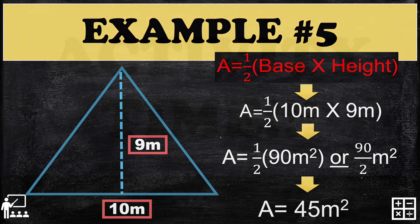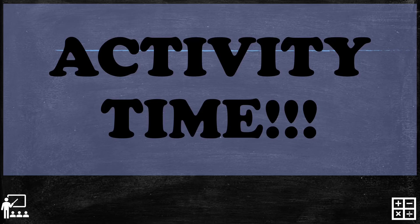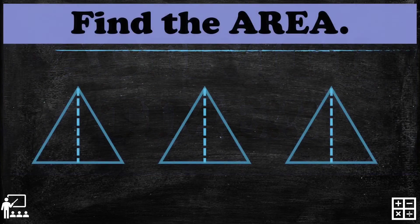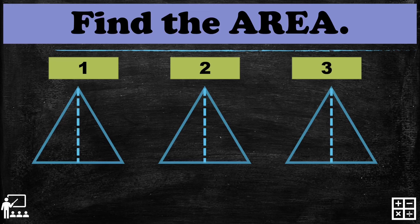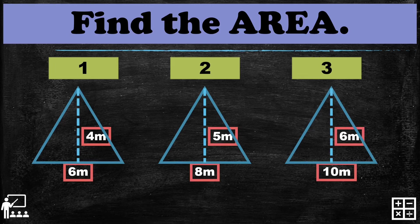Now let's proceed to activity time. I will give you 30 seconds to answer this activity. Find the area of the first, second, and third triangles. The first triangle has its measurements shown, the second has its measurements, and the last triangle has its measurements. Remember the formula: base times height over two — just multiply the base and height and divide by two. Your 30 seconds starts now.